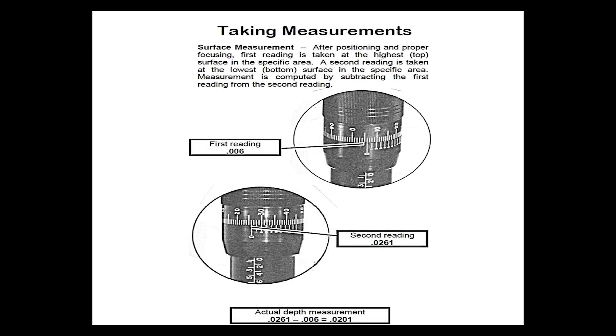Taking measurements. Surface measurement. After positioning and proper focusing, first reading is taken at the highest or top surface in the specific area. A second reading is taken at the lowest or bottom surface in the specific area. Measurement is computed by subtracting the first reading from the second reading.